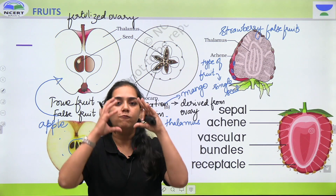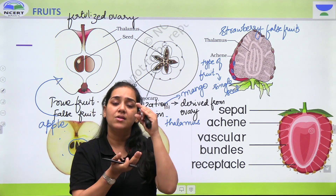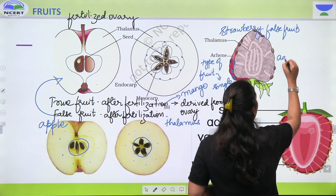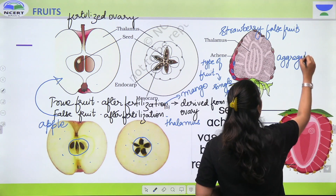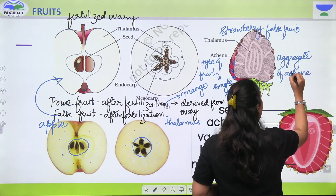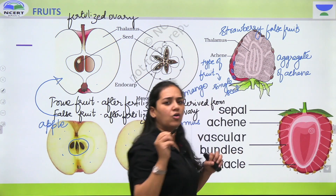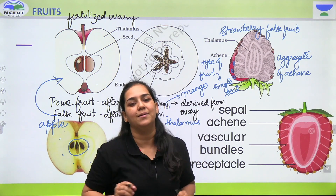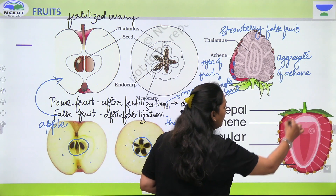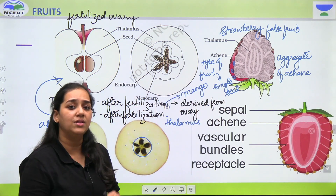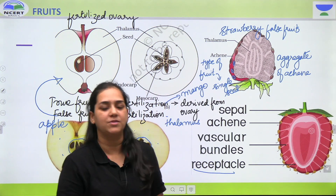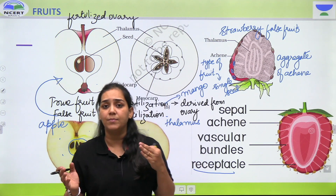Bohot sare chhote chhote fruits jo hai, woh ek thalamus pe settled hai aur ek group bana lete hai, ya phir aggregate bana lete hai. Achene is a type of fruit normally bearing a single seed. Aur jo bhi edible portion hai, jo bhi hum log khate hai in strawberry, that is called as the thalamus or the receptacle. Toh strawberry aur apple kiske example hue — they are examples of false fruits.